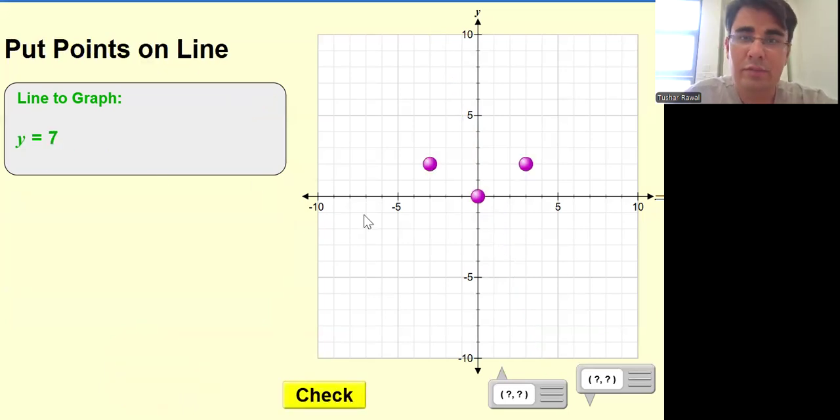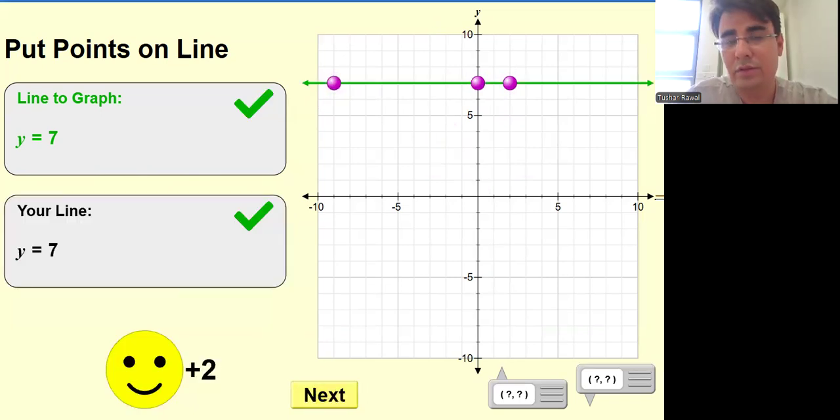y = 7. As I told you, there's no x, so just go to 7 and plot all three points on the 7th line, wherever you want.